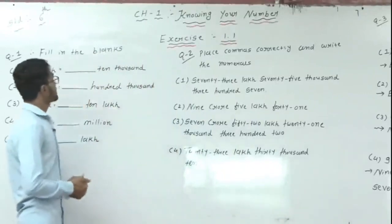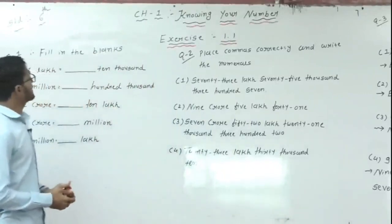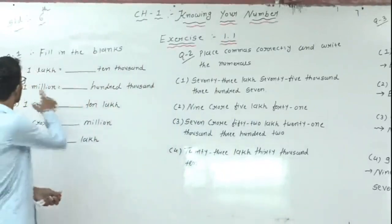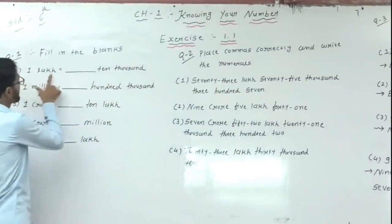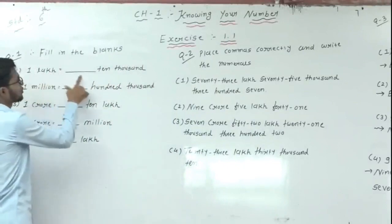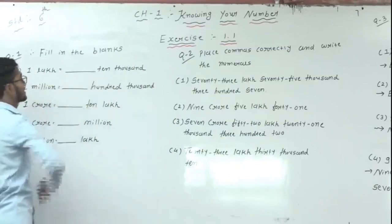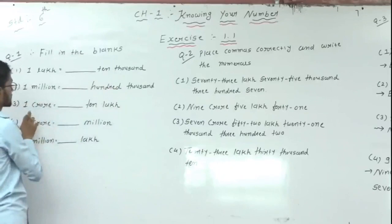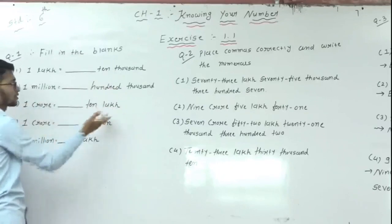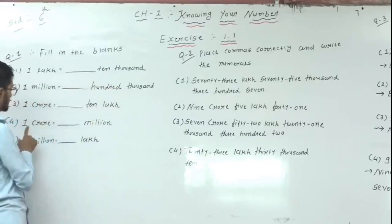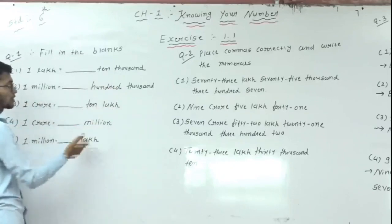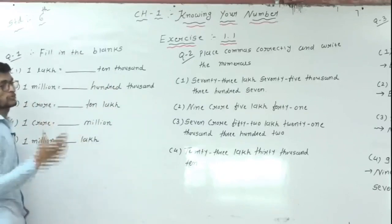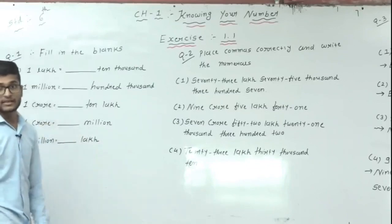So for the first question, filling the blanks. First: 1 lakh is equal to how many 10,000s? Second: 1 million is equal to how many 100,000s? Third: 1 crore is equal to how many 10 lakhs? And: 1 crore is equal to how many millions? And 1 million is equal to how many lakhs?